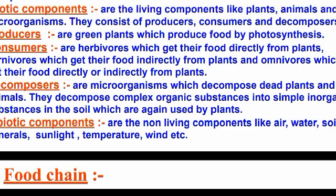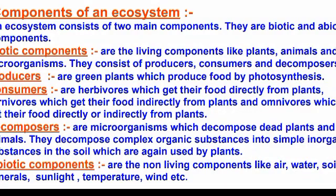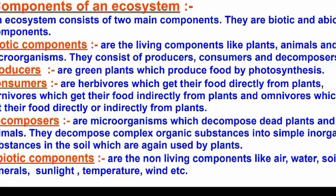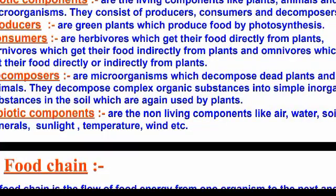The two types of components in the ecosystem are biotic and abiotic. Abiotic components include air, water, soil, minerals, sunlight, temperature, and wind — all non-living components.